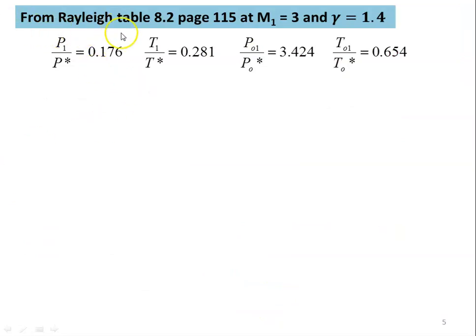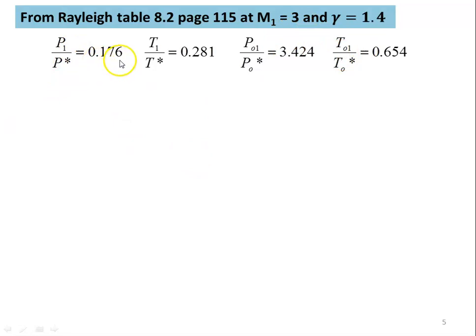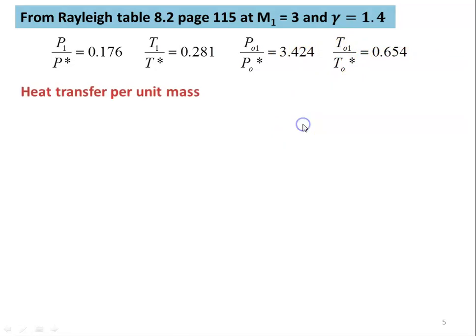From Rayleigh table, table number 8.2, page number 115, at Mach number M1 equal to 3 and gamma equal to 1.4, we take the property ratios: P1/P* equal to 0.176, T1/T* equal to 0.281, P01/P0* equal to 3.424, and T01/T0* equal to 0.654.